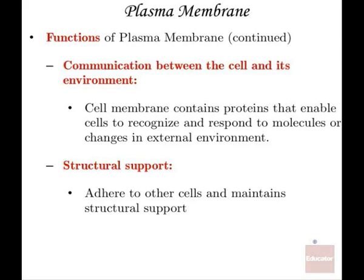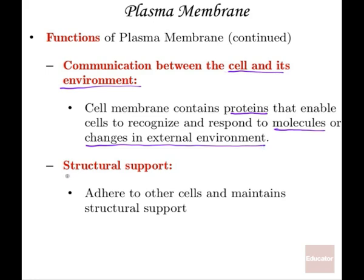The membrane also provides a way in which the cell can communicate with the environment. There are various receptors on the membrane that enable multiple proteins to very uniquely land on the membrane and signal the cell. There are also various unique identifiers contained in the membrane that distinguish particular cells from other cells. Another important function is structural support — the membrane enables the cell to attach to other cells, as well as provides almost like a barrier or shield against the outside world.